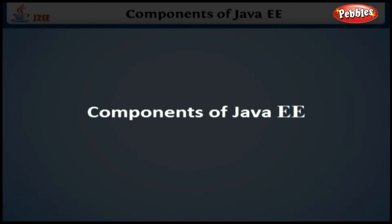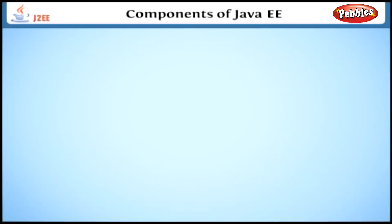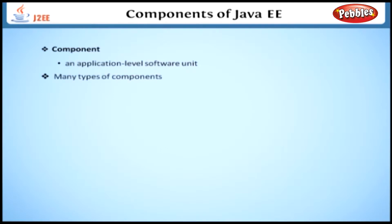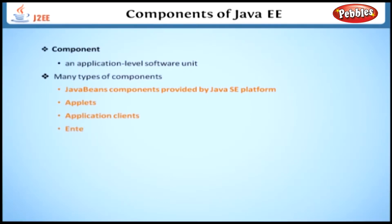Here we will discuss about the various components present in the Java EE platform. A component is an application-level software unit. In the Java EE platform, we have many types of components in addition to the JavaBeans components provided by the Java SE platform. The various components are Applets, Application Clients, Enterprise Java Beans or EJB, Web Components, and Resource Adapter components.